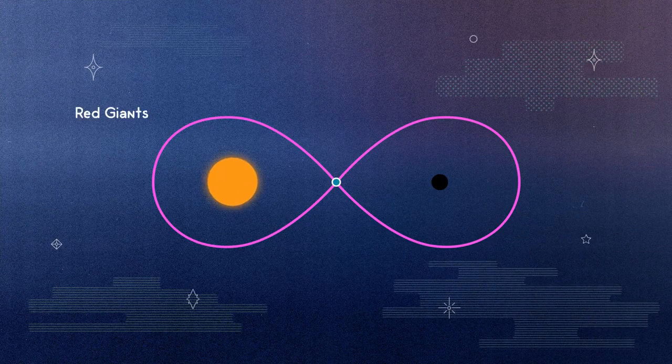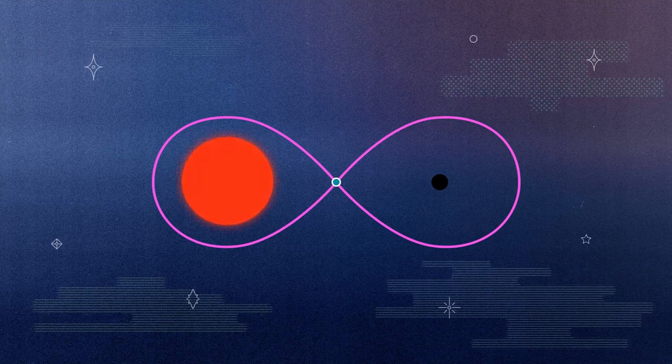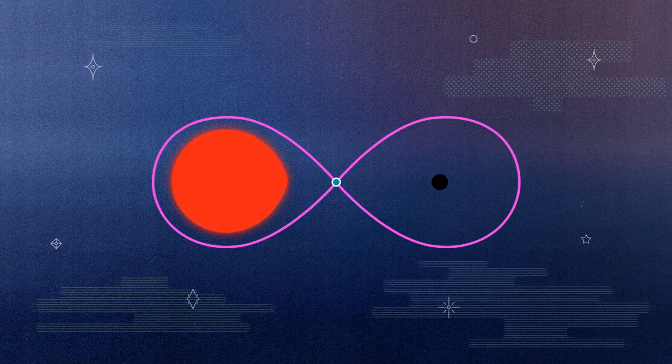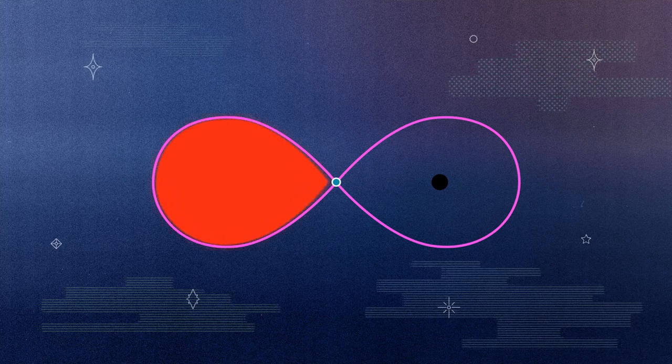Black hole binaries are a type of system which contain two massive bodies, and so these systems also have Roche lobes and Lagrange points. But how does this help us understand the transfer of matter?